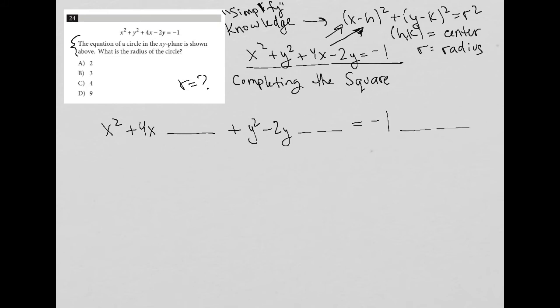So completing the square, first rule is to take half of this middle term, so half of 4, which is 2, and then square it, which is 4. So I'm going to add that there, and the same thing with the negative 2, half of negative 2 is negative 1, and then square it, that's positive 1, so I'm going to add that there. And I have to also add those same values to the right side of the equation.